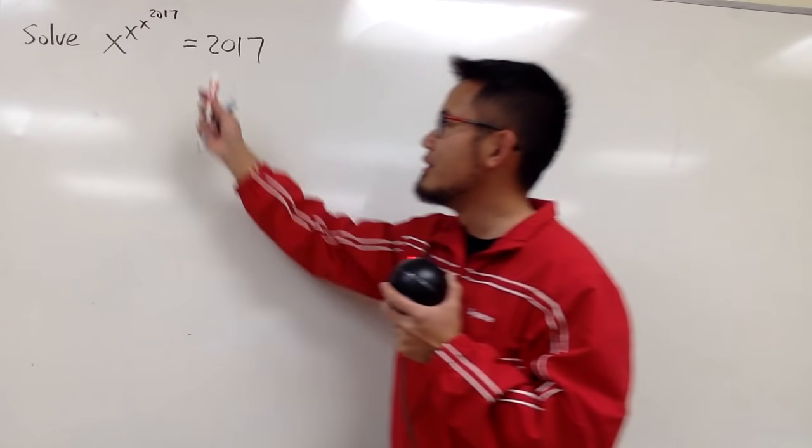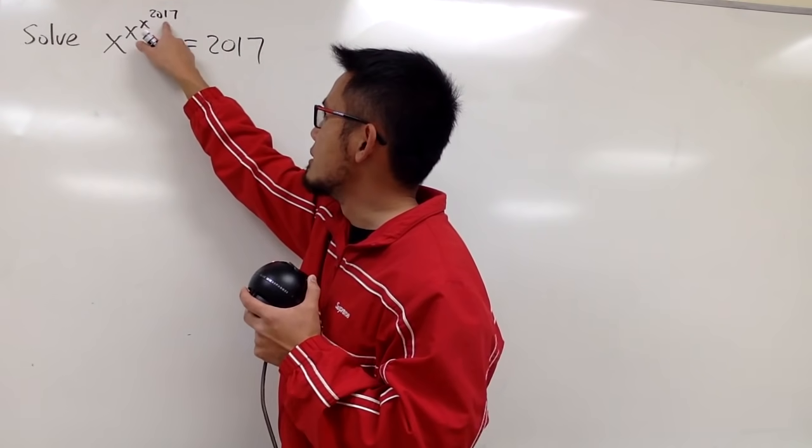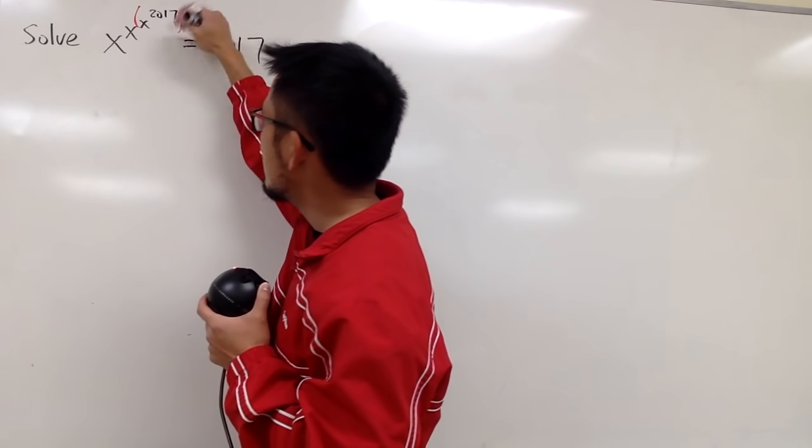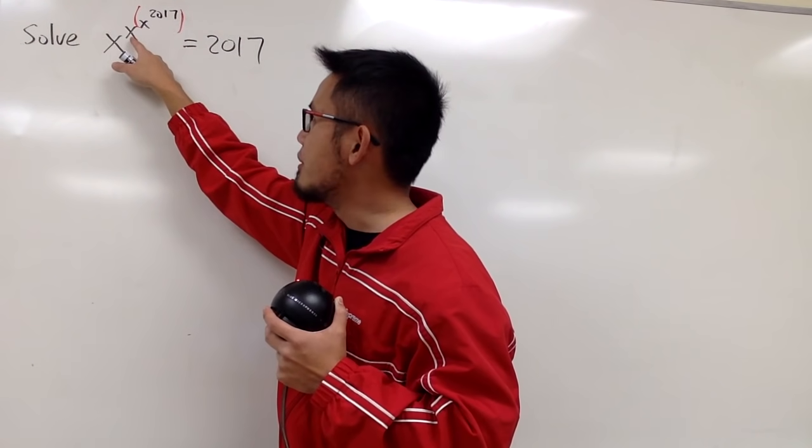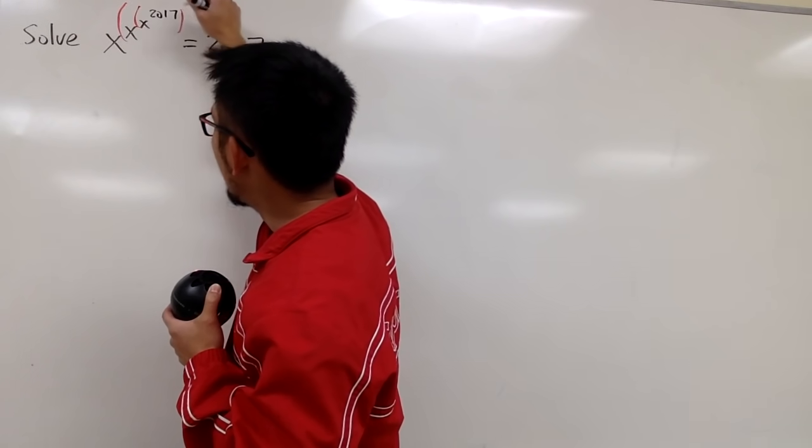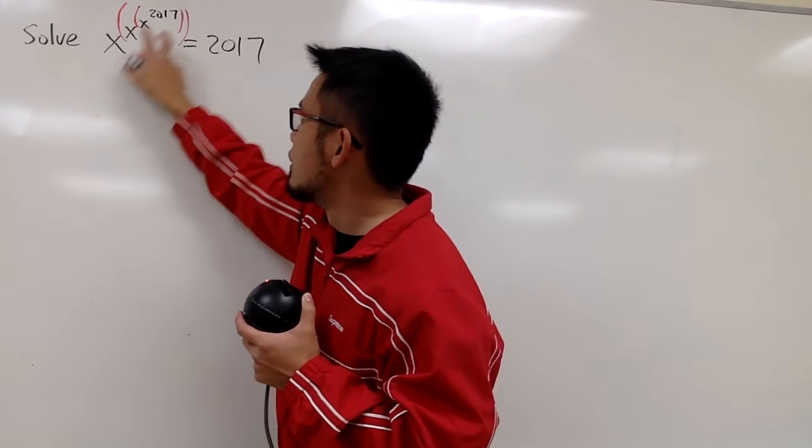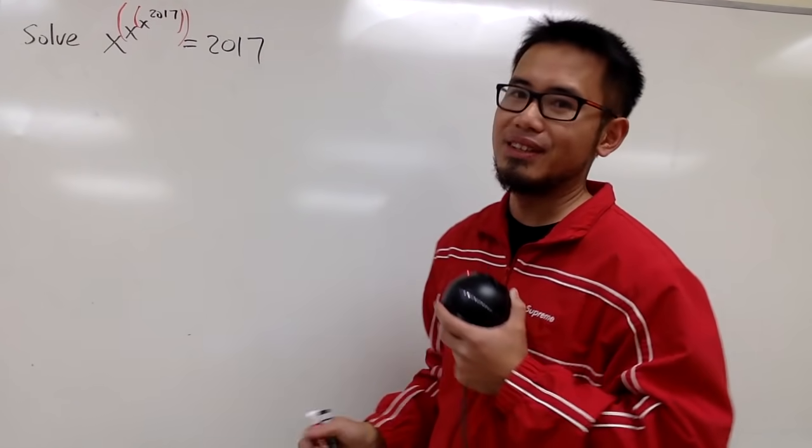When we have this notation right here, it means that we have to actually work this out first, then the x to the 2017 power. And then use that as the result for this exponent here, so we have to do this part next. At the very end, we will have to do x to that exponent, and hopefully the result equals 2017.